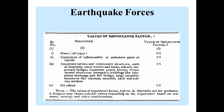This is the table of the importance factor I for structures. For all types of dams, the importance factor I value is 3, and the rest are values for other structures. The values of importance factor I given in this table are for guidance; the designer may choose a suitable value depending on the importance based on economy, strategy, and other considerations.